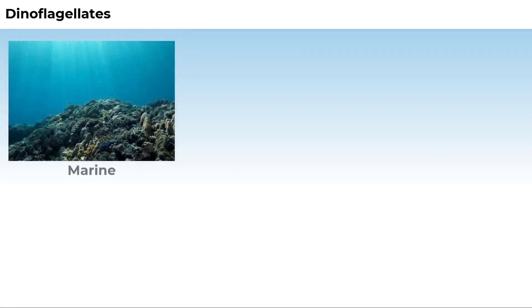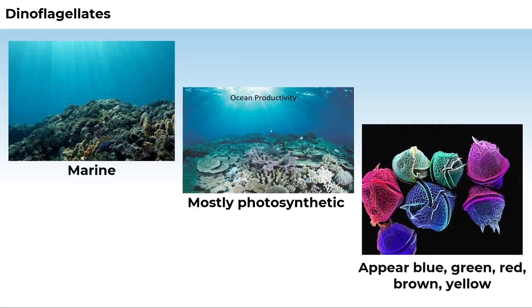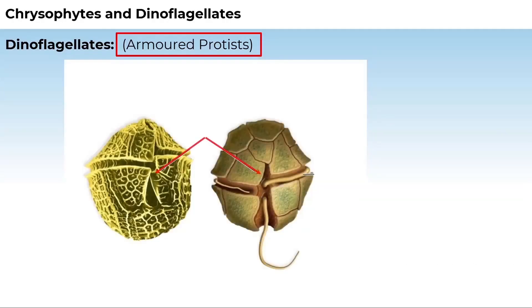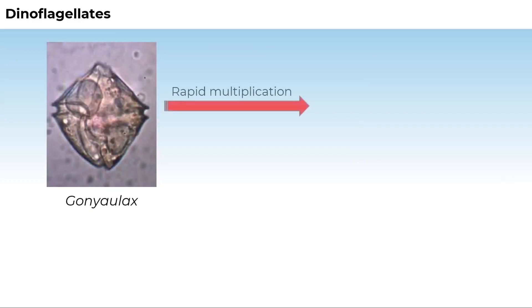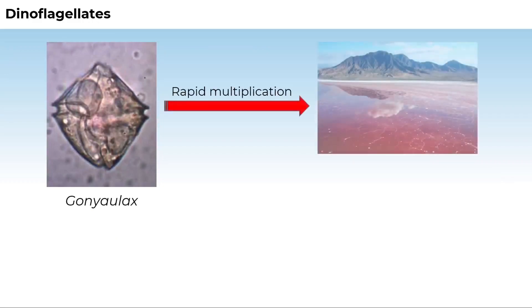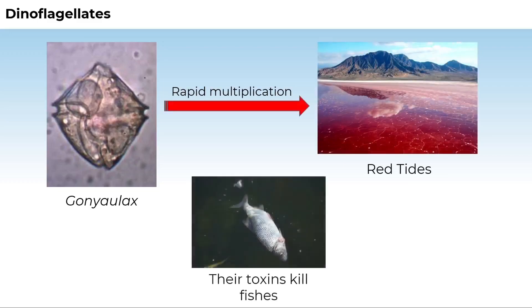Dinoflagellates are mostly marine and photosynthetic. They appear blue, green, red, brown, or yellow depending on the main pigments present in their cells. The cell wall has stiff cellulose plates on the outer surface, and most have two flagella — one longitudinal and one transverse in a furrow between the wall plates. Red dinoflagellates, for example Gonyaulax, can undergo rapid multiplication making the sea appear red, known as red tides. Toxins released by such large numbers may even kill other marine animals such as fishes.